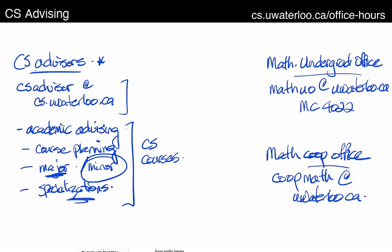There's another group you should be aware of: the Math Undergrad Office, on the right-hand side. They have primary responsibility for math students as a whole. There's a large number of advisors and administrators there who are extremely knowledgeable about programs within mathematics. They handle a lot of courses that aren't CS, so if you're a CS student with questions about your stats courses or first-year math courses, they're the group you'll want to talk to. You can email them at mathugo@uwaterloo.ca, or visit them at MC 4022.